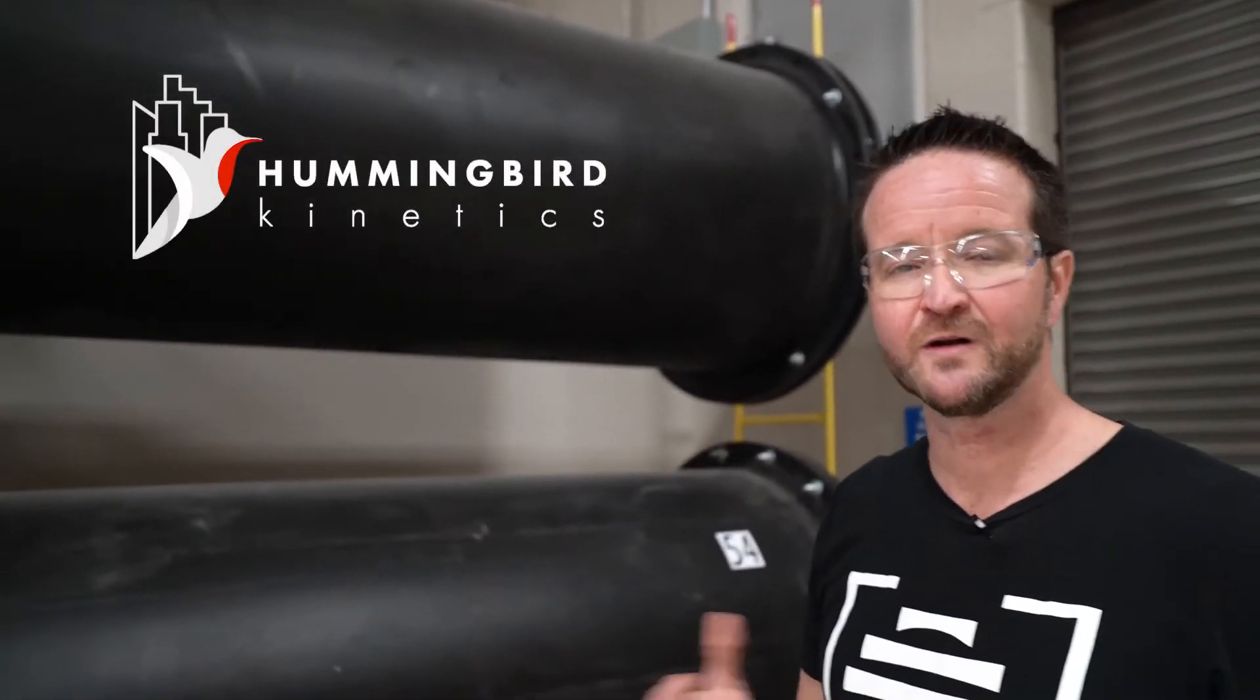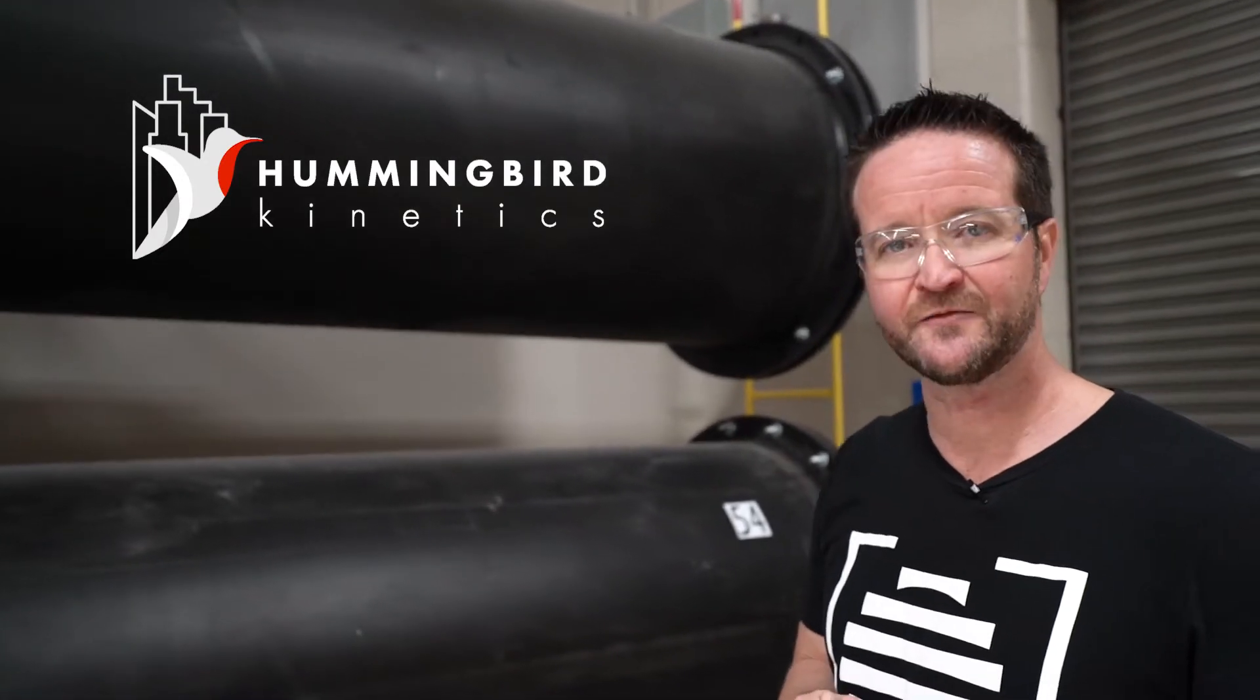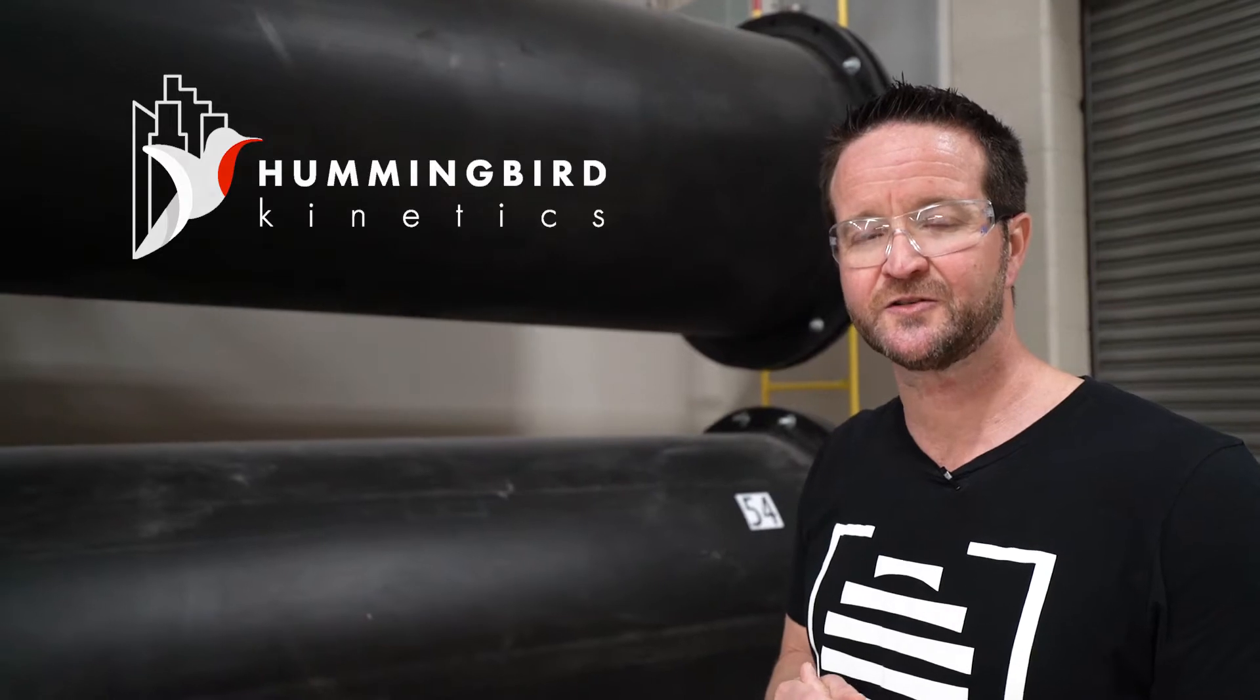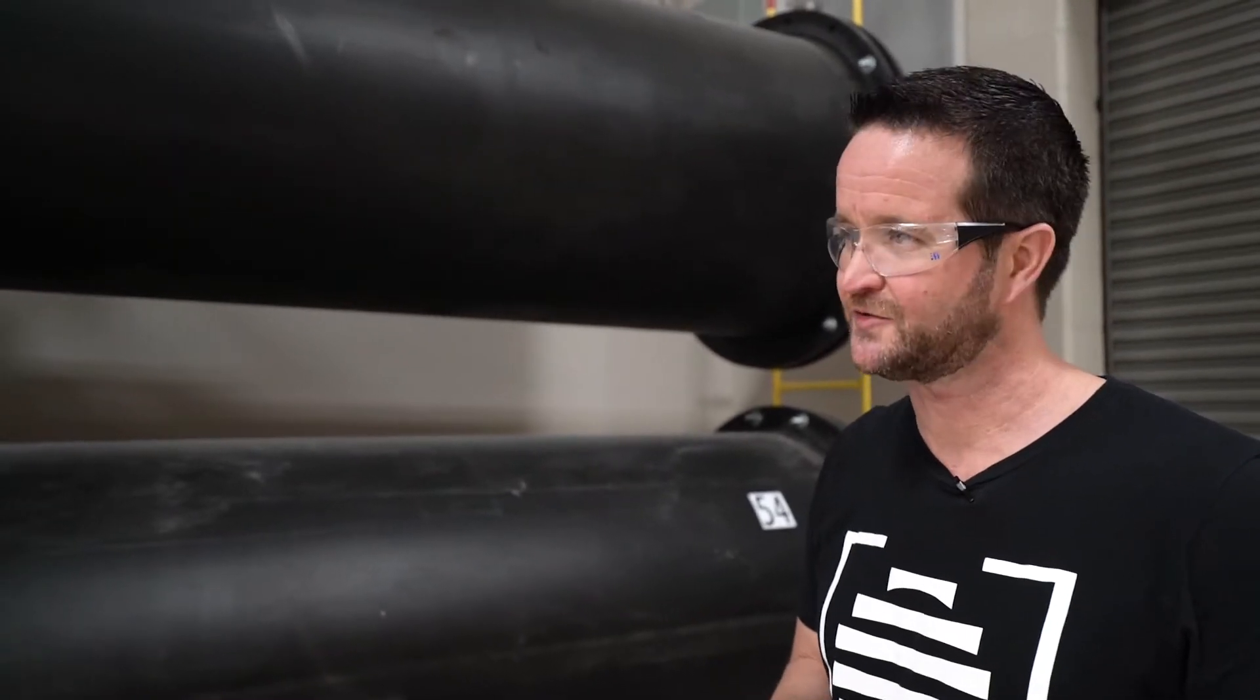The Hummingbird Damper is a type of tuned mass damper, one of the many types that we offer as a way to introduce damping into a structure and reduce motions of that structure.